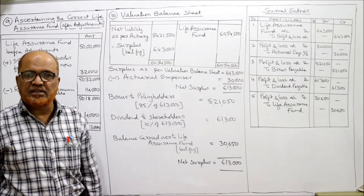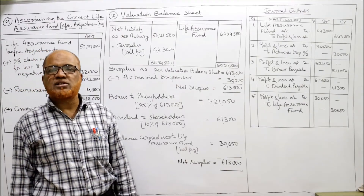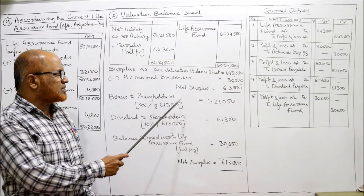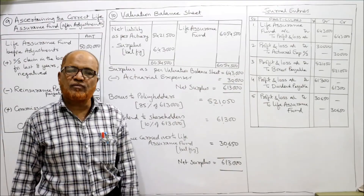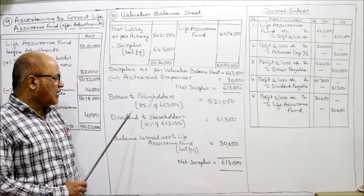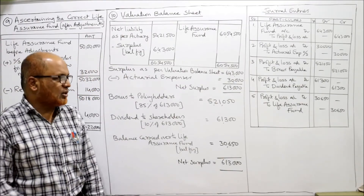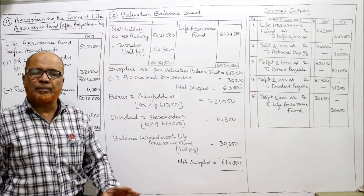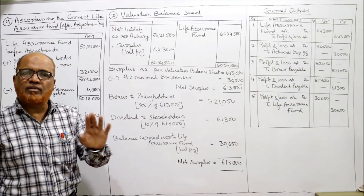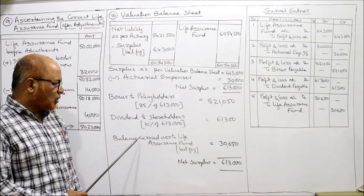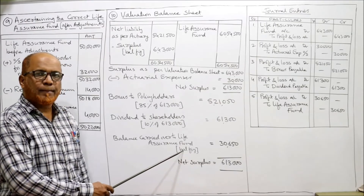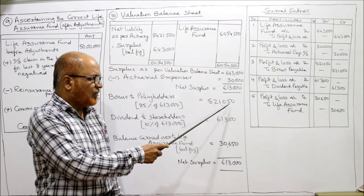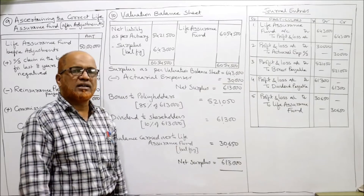85% of net surplus will be given as bonus to policyholders: 85% of ₹6,13,000 = ₹5,21,050. Dividend to shareholders at 10% of ₹6,13,000 = ₹61,300. 85% plus 10% is 95%, so the remaining 5% — ₹30,650 — will be carried over to the life insurance fund as the balancing figure.